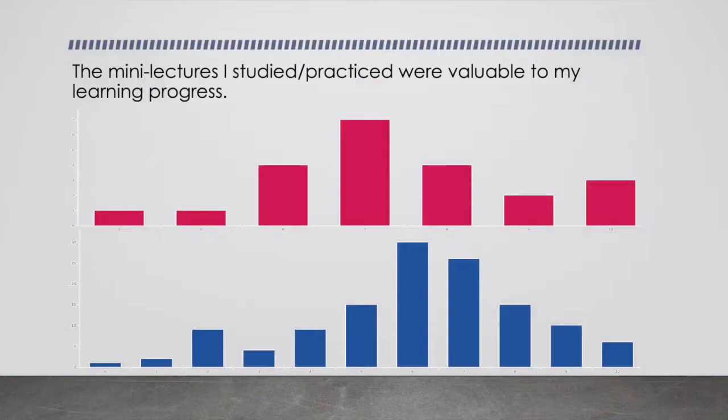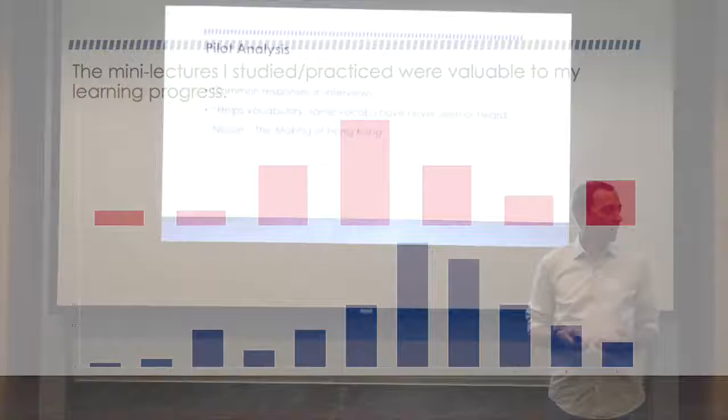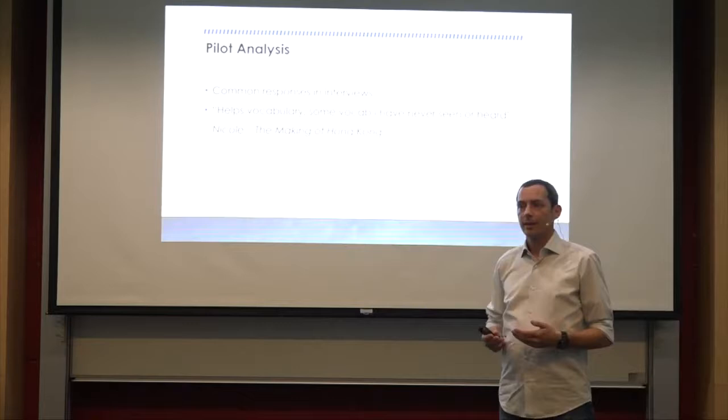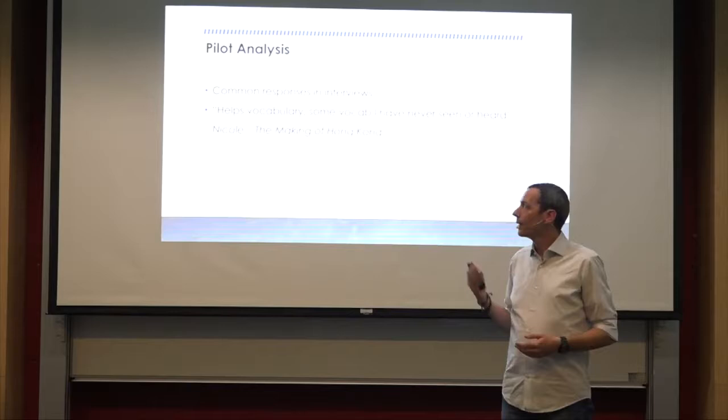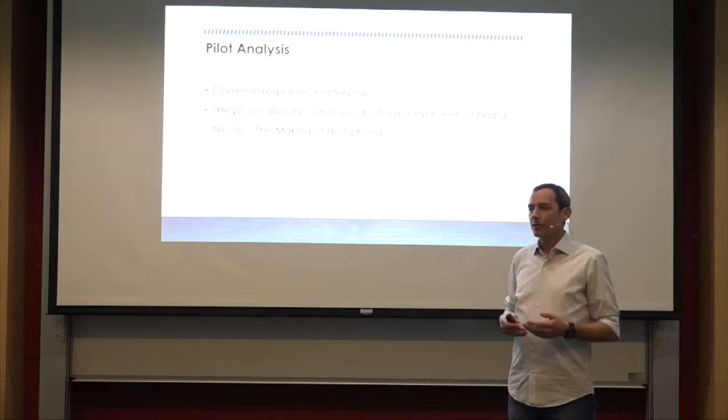Next one then is that the mini lectures that they studied or practiced were valuable to the learning process. Again, we have a similar range as they go from 6 to 8 in the making of Hong Kong. And again, we can see that this time we do have a larger number of students choosing between 6 to 8 in the process of science.